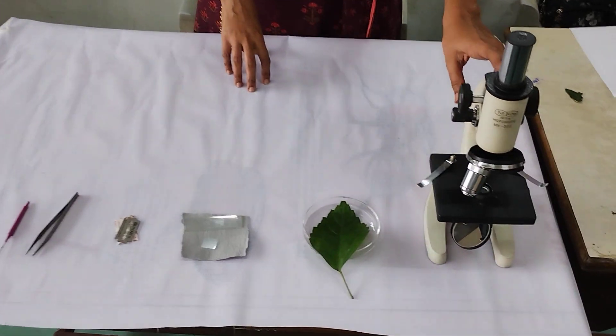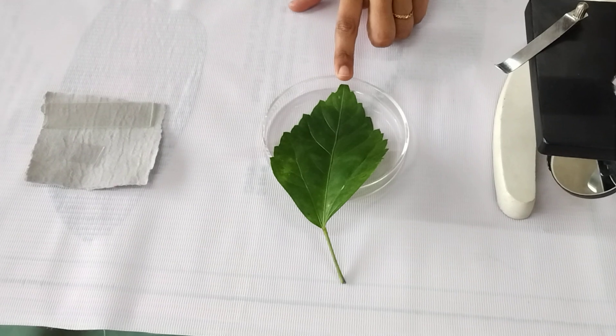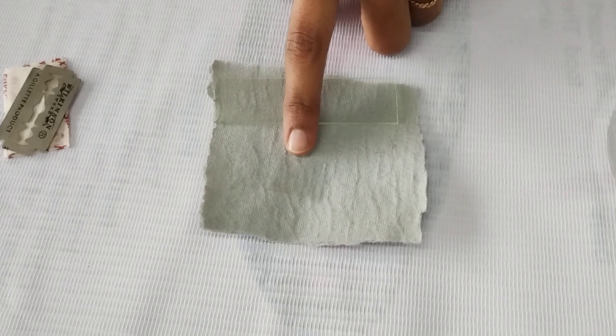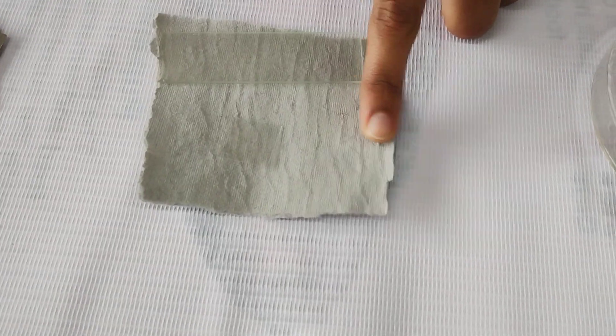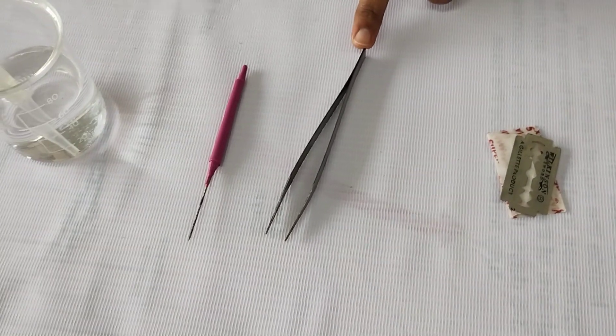Requirements are one compound microscope, one dichot leaf (hibiscus leaf), one slide, one cover slip, filter paper, new blade, forceps, needle, and distilled water.